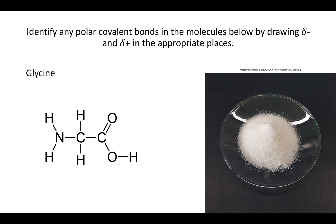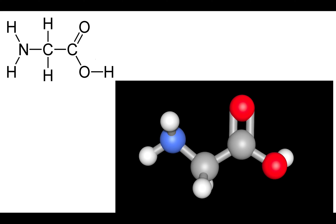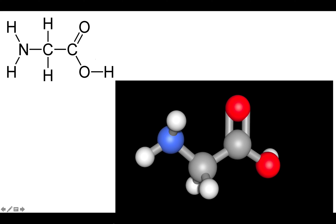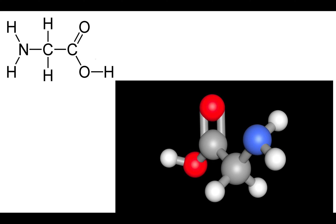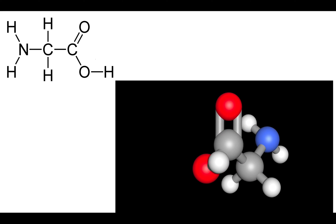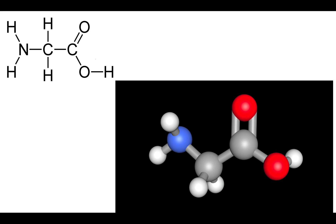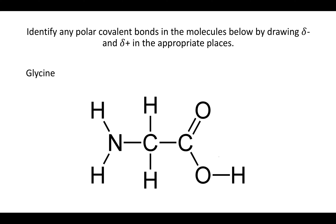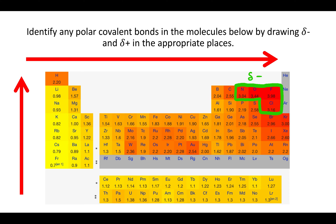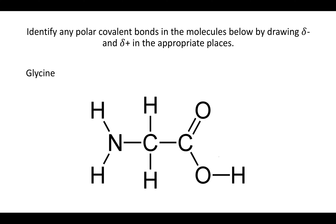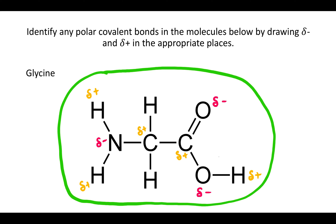Now let's do the same thing with glycine, the amino acid. This is what glycine looks like three-dimensionally — the red atoms are oxygens and the blue one is a nitrogen. We look at the molecule and ask: is there a nitrogen, oxygen, fluorine, or chlorine? There are. So next to each of those will be a slightly negative charge, since those atoms are really attracting the electrons around them and in the bonds. Anything they're bound to is going to be slightly positive — those are the partial charges on glycine.